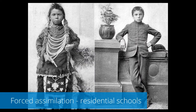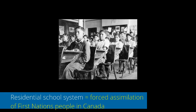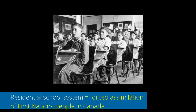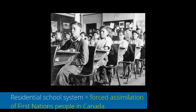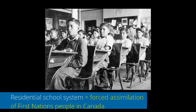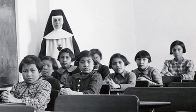Another form of assimilation is when the majority in society forces those in the minority to assimilate. This was true of the residential school system in Canada during the 19th and 20th centuries. First Nations children were forced to leave their families and attend residential schools across Canada, where they were taught only English or French and forced to adopt European and Christian culture and values, with very negative effects on First Nations people in Canada.